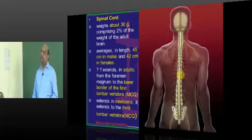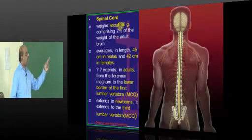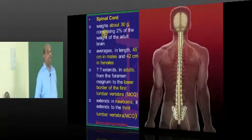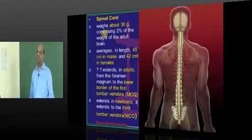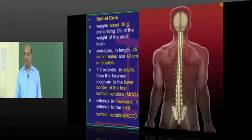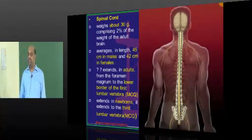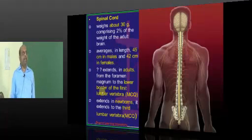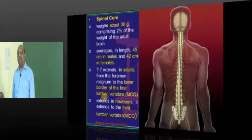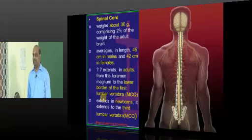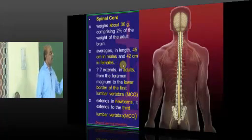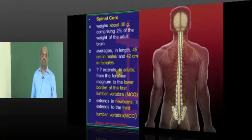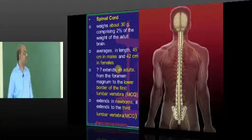The spinal cord weighs about 30 grams and constitutes about 2% of the weight of the adult brain. More than the weight, the spinal cord needs to be remembered for its length, which is the favourite question of the examiner: 45 centimetres in males and 42 centimetres in females is the typical length of the spinal cord.